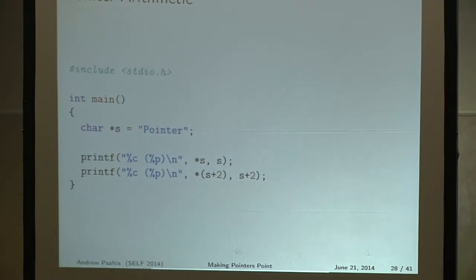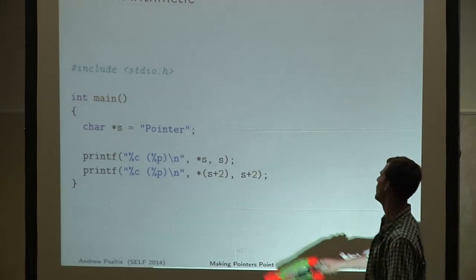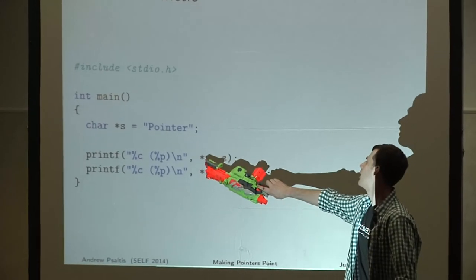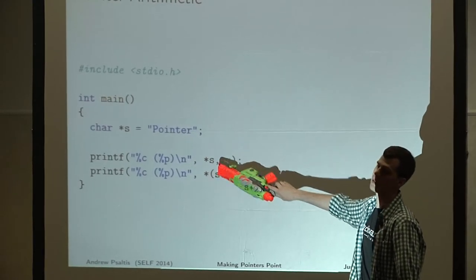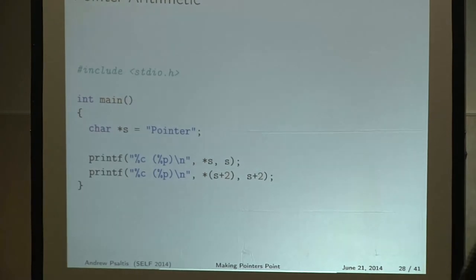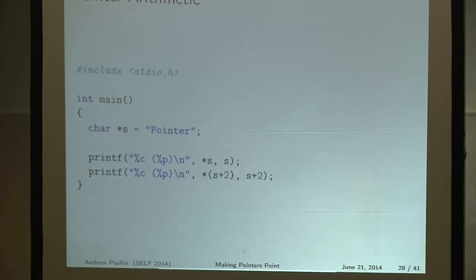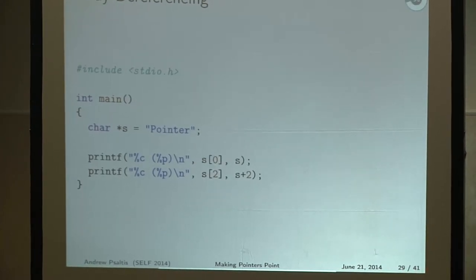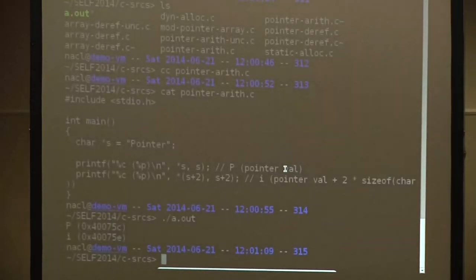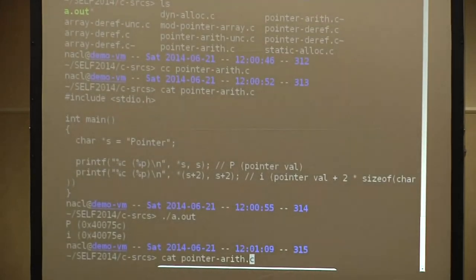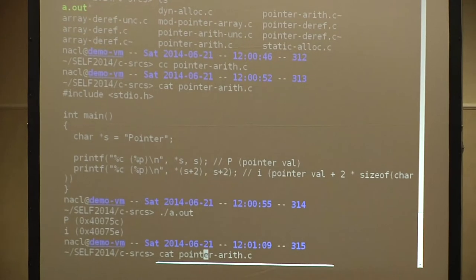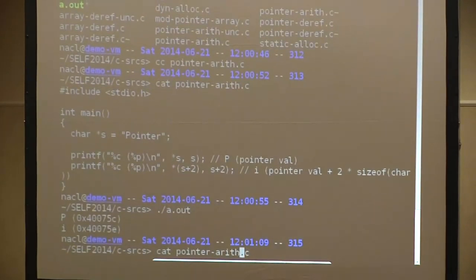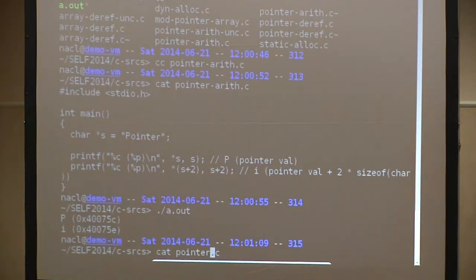The array subscript operator does the exact same thing as dereferencing the pointer plus an offset. So S[0] is equivalent to dereferencing the value of S plus zero — the array index. And these actually produce the exact same program when compiled.